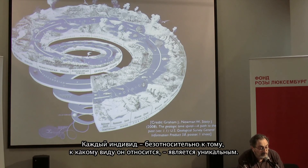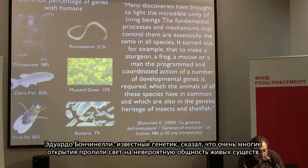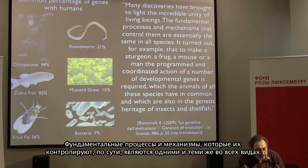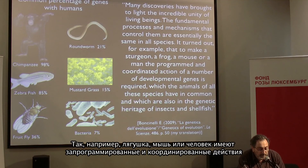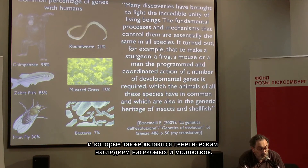Every individual, whatever the species to which it belongs, is unique. Yet all individuals are pervaded by the same matter and the same processes. According to geneticist Eduardo Boncinelli, many discoveries have brought to light the incredible unity of living beings. The fundamental processes and mechanisms that control them are essentially the same in all species. To make a sturgeon, a frog, a mouse or a man, the programmed and coordinated action of a number of developmental genes is required — genes that the animals of all these species have in common, and which are also in the genetic heritage of insects and shellfish.